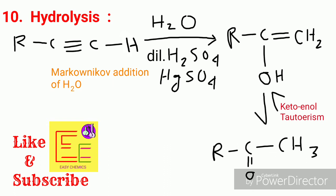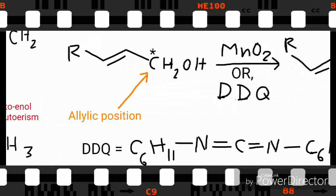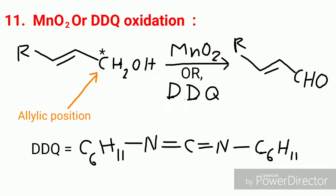Next is hydrolysis of alkyne. Hydrolysis occurs in alkyne by adding dilute H₂SO₄ and H₂O, added by Markovnikov's rule. Further, keto-enol tautomerism gives a ketone as the product. Now we discuss MnO₂ or DDQ oxidation: the allylic carbon containing a CH₂OH group is converted to CHO by MnO₂ or DDQ treatment.